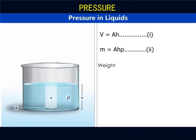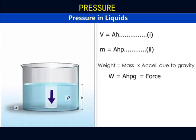Weight of the liquid column is equal to mass times the acceleration due to gravity, g. That is, weight equals Mg. Substituting equation 2 here, then weight equals A h rho times g. This weight is the force that the liquid column is exerting on the coin.